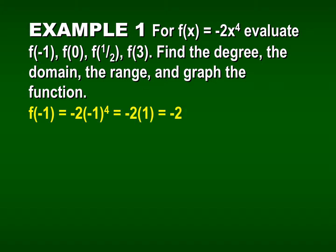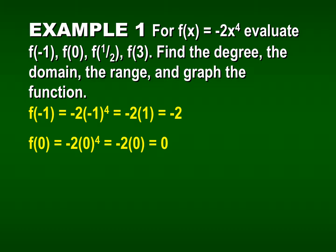We plug in negative 1 for x: negative 2 times negative 1 to the fourth power. Notice the use of parentheses around that negative 1. Negative 1 to the fourth power equals 1, and then negative 2 times 1 is negative 2. We don't multiply negative 2 times negative 1 before applying the fourth power — according to order of operations, we handle exponents first. For f of 0: 0 to the fourth is 0, and negative 2 times 0 is 0.